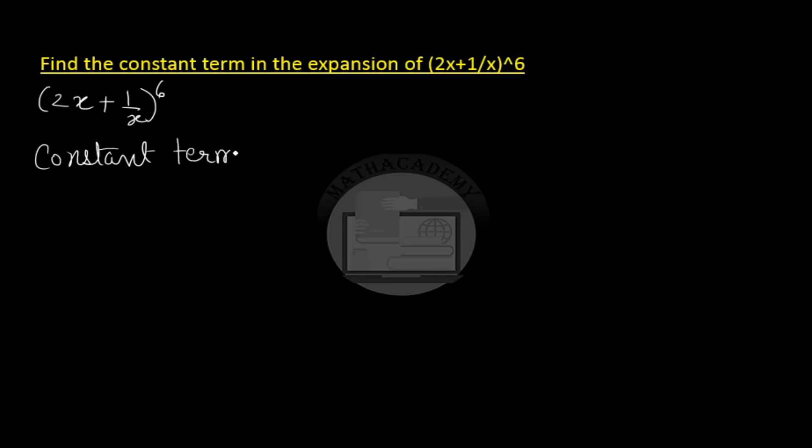Constant term means that there is no variable in that term. This means that x should be raised to the power of 0, and then only that term will become a constant term.